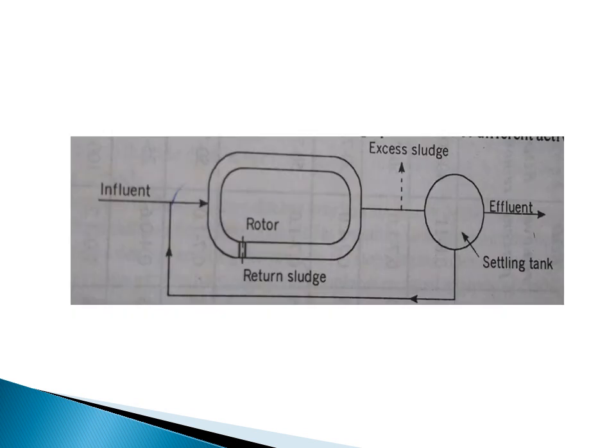In this figure, the influent enters into the oxidation ditch where we are providing a rotor, and the rotor rotates with a velocity of 0.3 to 0.4 meters per second. After rotating, it aerates the sewage well. In the case of an intermittent system, there is no need to provide a separate settling tank, but in the case of a continuous flow type oxidation ditch, we can provide a separate settling tank.